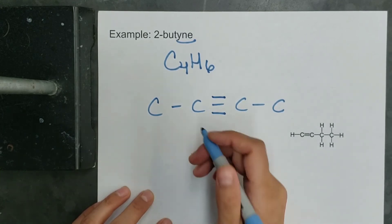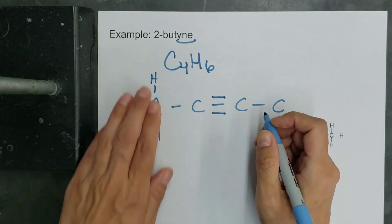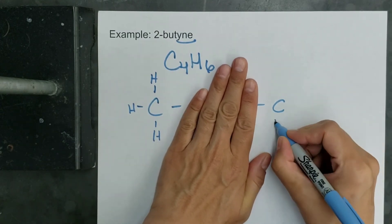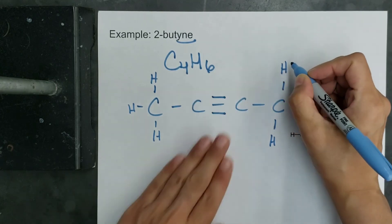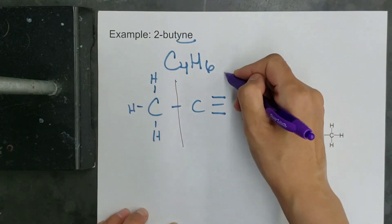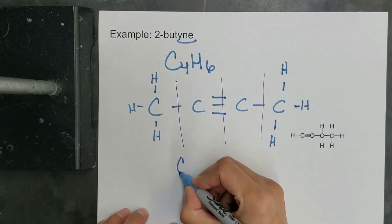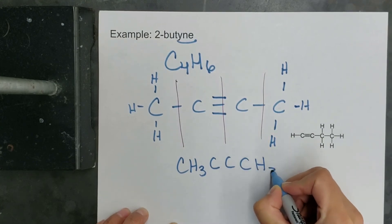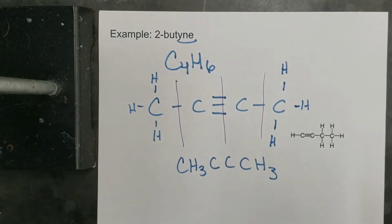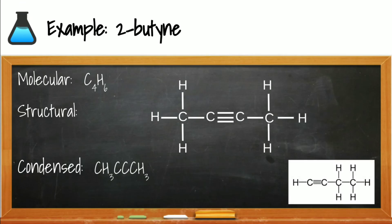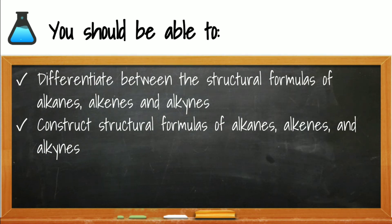After adding the hydrogens to 2-butyne and writing the condensed formula, you should now be able to differentiate between the structural formulas of alkanes, alkenes, and alkynes, and construct the structural formulas of all three series. That concludes lesson 62. Make sure you complete your homework on Google Classroom, bring any questions to class, and I'll see you soon.